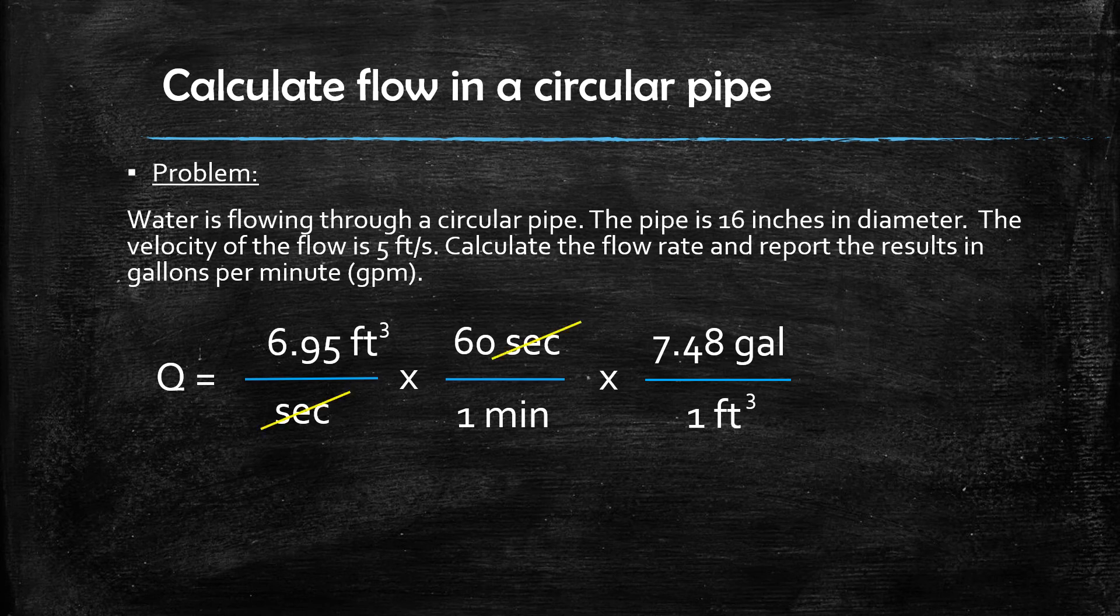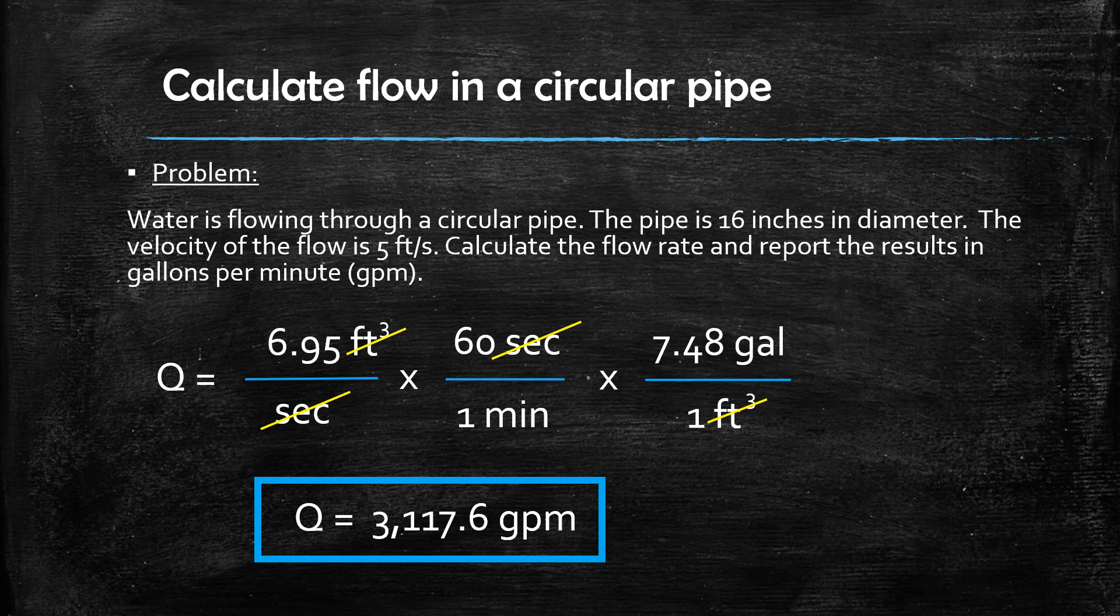The units of seconds will cancel out, the units of cubic feet will cancel out, and the final result is in gallons per minute. The final result for this problem is that the flow rate through the circular pipe is 3,117.6 gallons per minute.